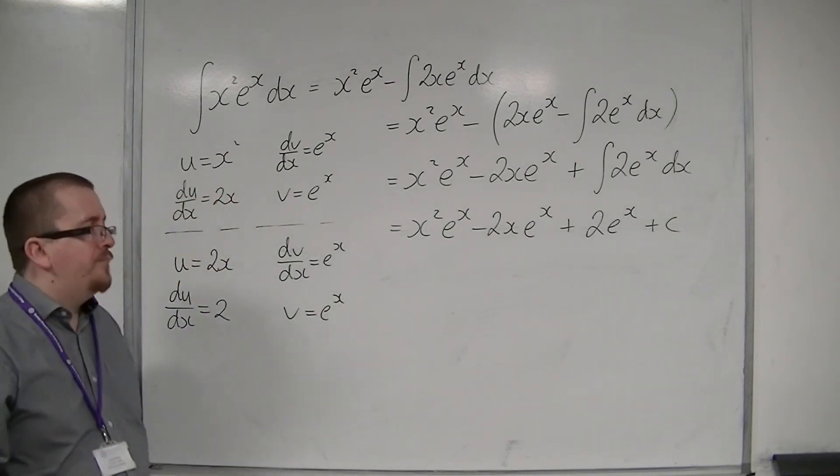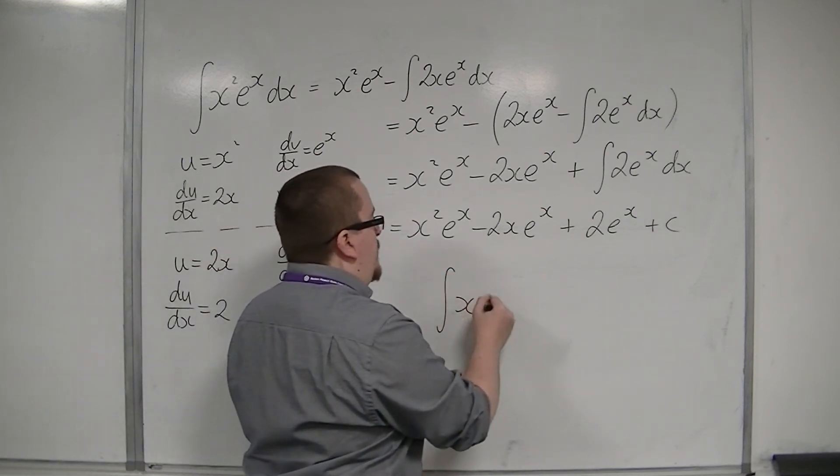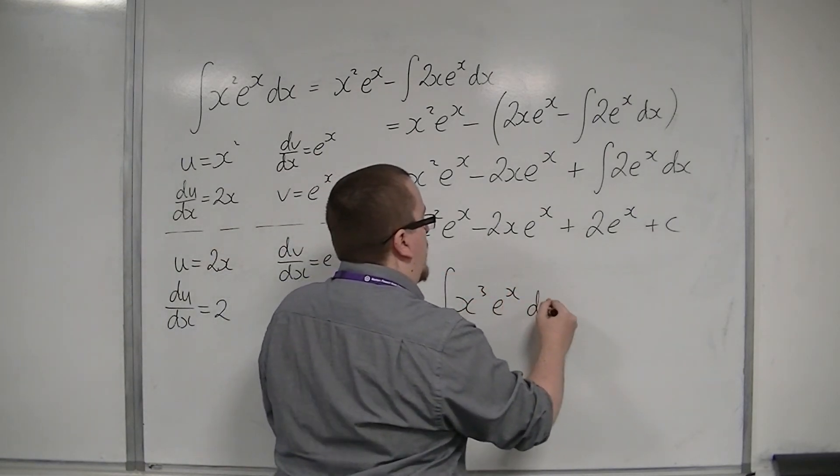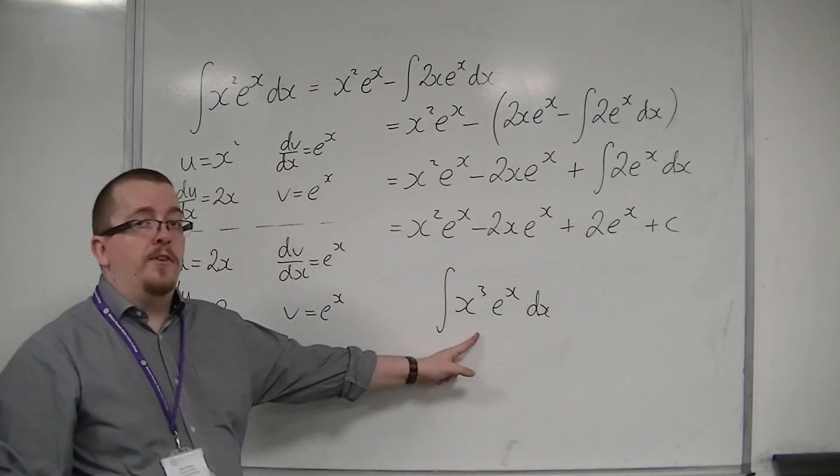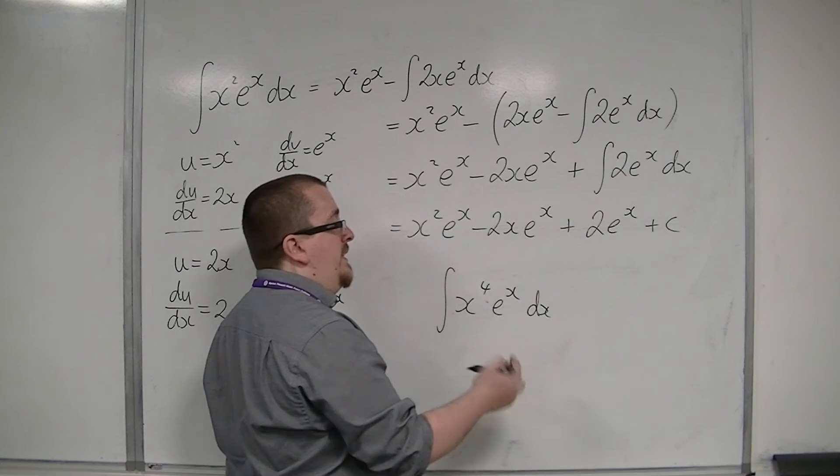X squared log x won't. So if you needed to do x cubed e to the x, then you would have to use integration by parts 3 times. 4 times for x to the 4 e to the x.